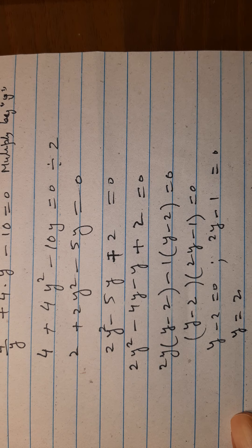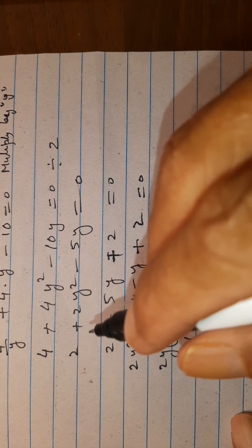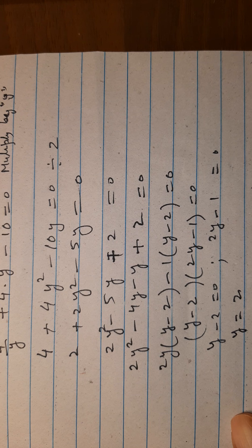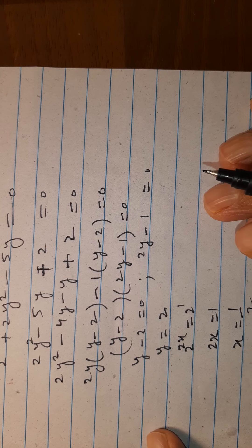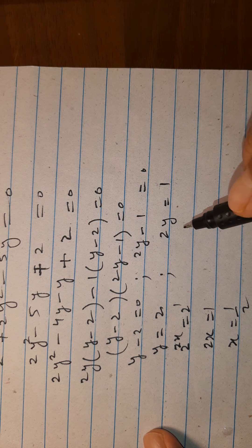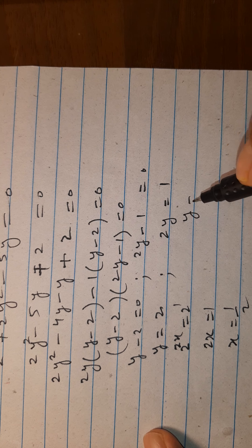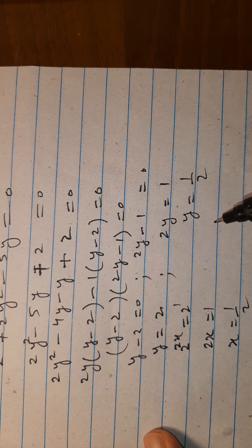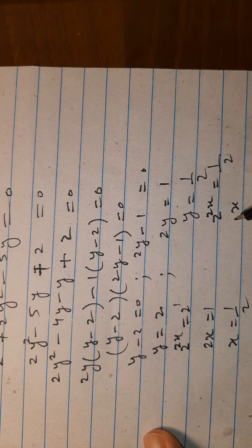Now y minus 2 equals 0 gives y equals 2, and since y equals 2 power 2x equals 2 power 1, we get 2x equals 1 and x equals 1/2. And 2y minus 1 equals 0 gives y equals 1/2, so 2 power 2x equals 2 power minus 1, giving 2x equals minus 1, and x equals minus 1/2.